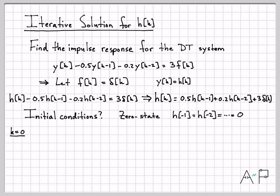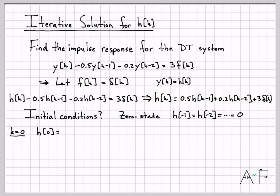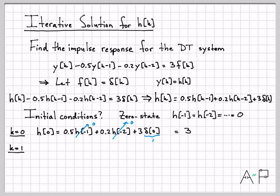For K equals zero, we replace all K's in the equation. We get H of zero equals 0.5 times H of minus one, plus 0.2 times H of minus two, plus three times delta of zero. The first two terms are zero because of the zero initial conditions, and delta of zero equals one. So H of zero equals three times one, which is three.